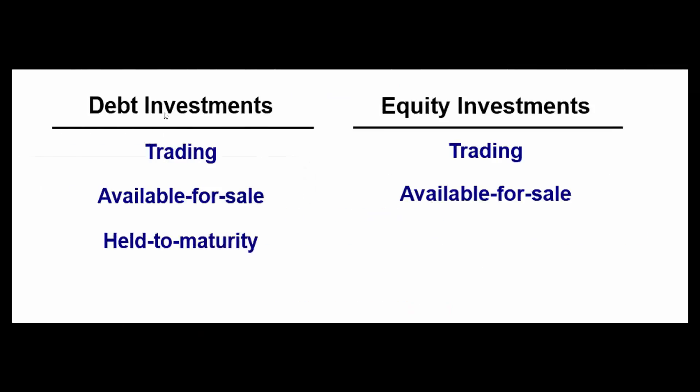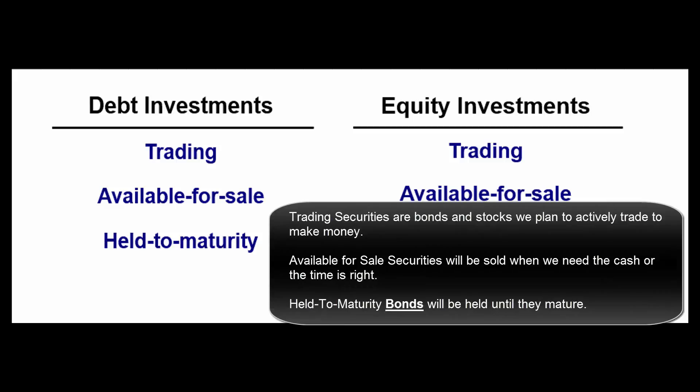If we bought some bonds or stocks of another company and we've designated them as trading securities or available-for-sale securities, we're going to mark them to market — they'll be on our balance sheet at fair value. That is not the case for held-to-maturity instruments. If we buy a bond and we're just going to hold on to it, it stays on our books at net book value.